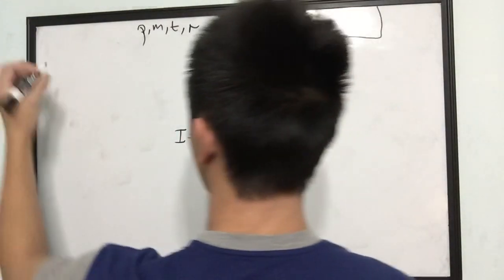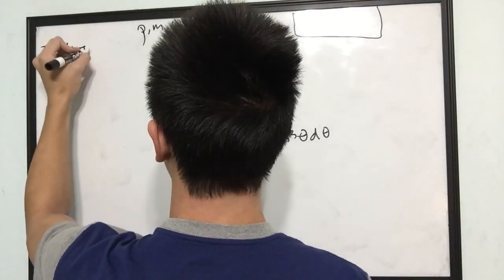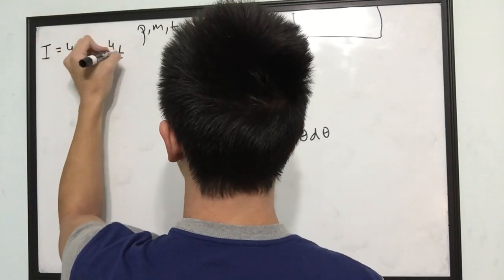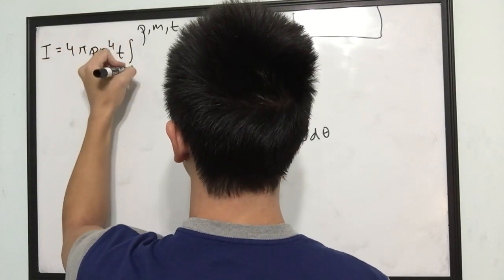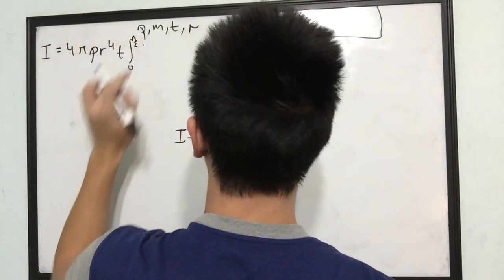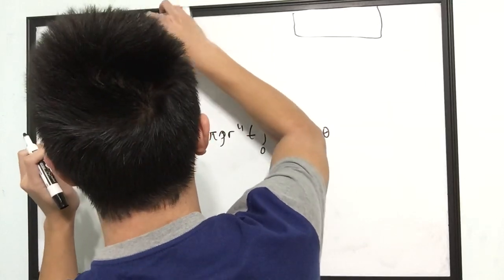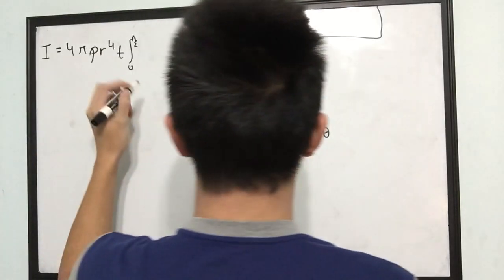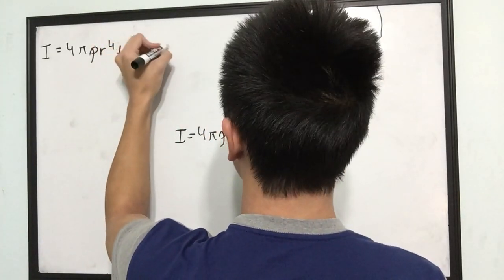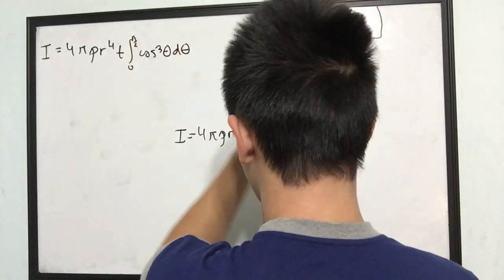So our I is equal to 4π·rho·r⁴·t · ∫ from 0 to π/2 of cos³θ dθ.